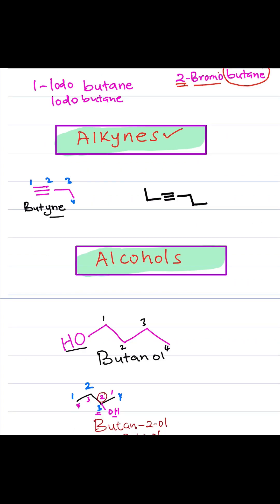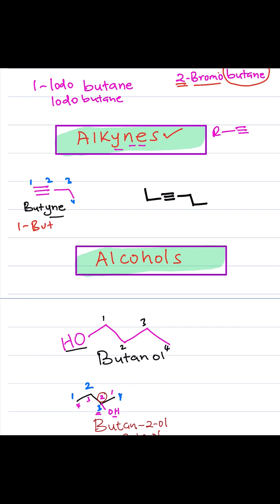Next, alkynes. Alkynes ends with Y-N-E, meaning a triple bond. An example has carbon number 1, 2, 3, and 4. We want the triple bond carbon to have the lowest position possible. Counting from the left, it's on position number 1; counting from the right, it would be position number 3. We want the lowest, so the name becomes 1-butyne, or but-1-yne. Because it's on position number 1, we don't have to indicate that — we can just call it butyne.